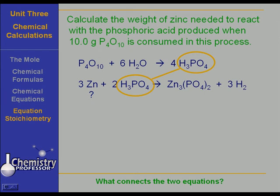So what we're going to do is start with the P4O10, go to phosphoric acid. And when we're at phosphoric acid, we're at phosphoric acid. It's the same thing in both equations. Then we go to zinc. Here we go.